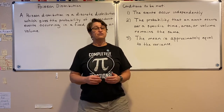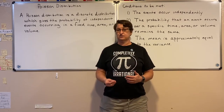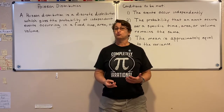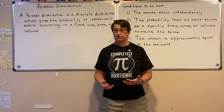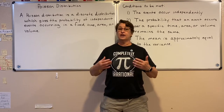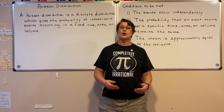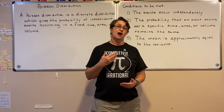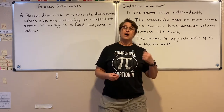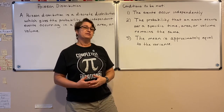With Poisson, the number of events that occur are not fixed. Remember, with binomial and hypergeometric, the number of trials or events was fixed. With Poisson, that's not true — it could go on and on forever, we could have a million events that occur. But the events do occur independently and that probability does remain the same.